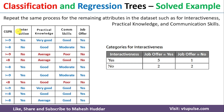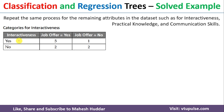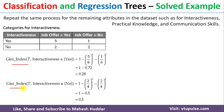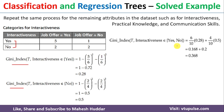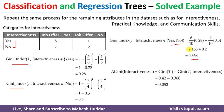Similarly, we calculate the Gini for the Interactiveness attribute. Interactiveness has only two possibilities — Yes and No — so there is only one possible subset split. We calculate the Gini index for Yes and No separately, combine them, and then compute Gini(Interactiveness) = Gini(whole dataset) − Gini(Interactiveness subset), which equals 0.052.